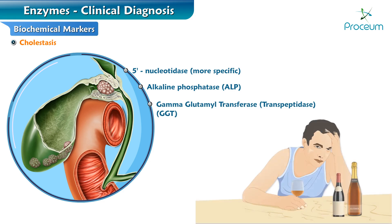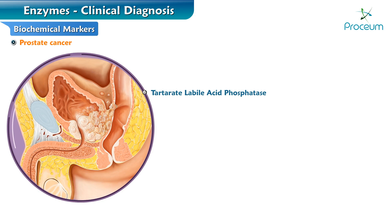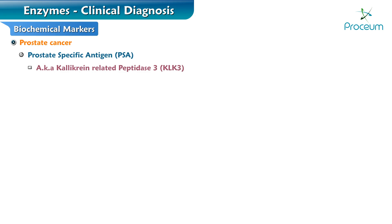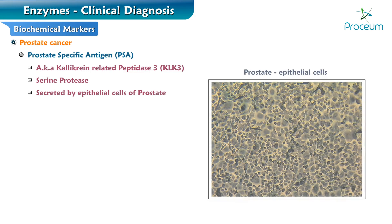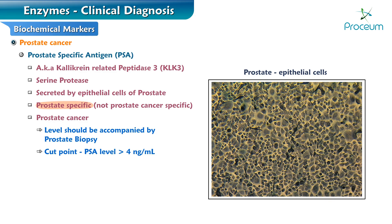Enzyme markers in prostate cancer include tartrate-labile acid phosphatase and prostate-specific antigen, or PSA. PSA is also known as kallikrein-related peptidase-3, or KLK3. It is a serine protease secreted by epithelial cells of the prostate. PSA is prostate-specific but not prostate cancer-specific, so PSA level estimation should be accompanied by prostate biopsy. A commonly used cut point for prostate cancer is a PSA level greater than 4 nanograms per milliliter.